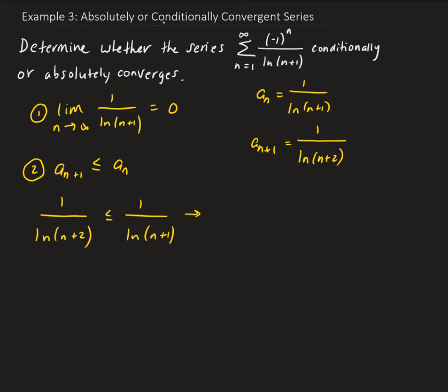This implies that natural log of n plus 1 is less than or equal to natural log of n plus 2. Since natural log is an increasing function, and for n going from 1 to infinity, the argument here is bigger than the argument here, this is a true statement because natural log is an increasing function.